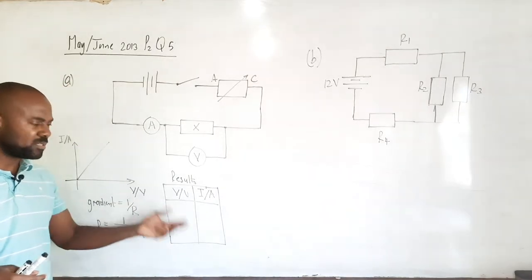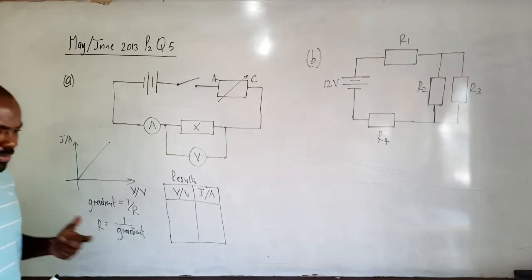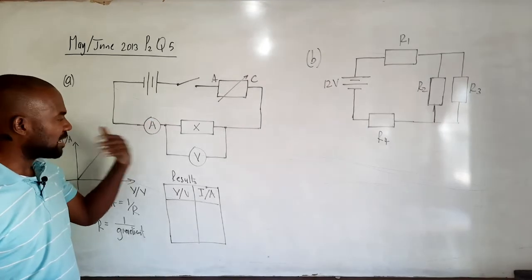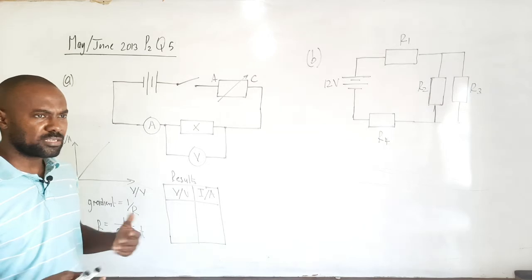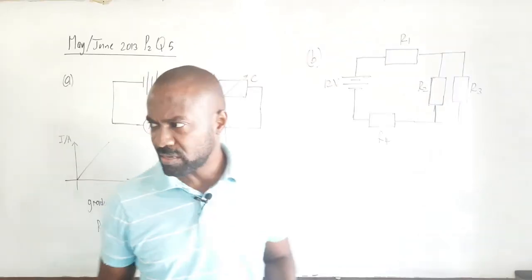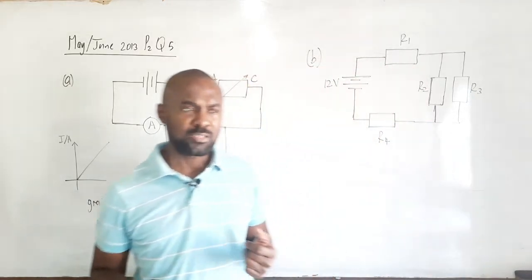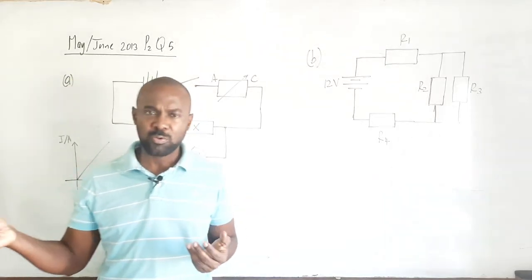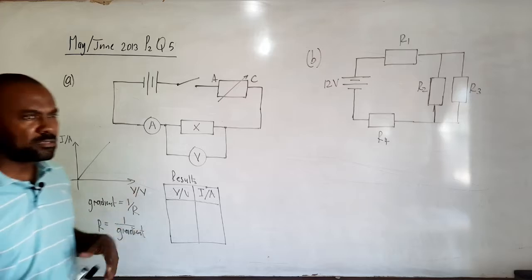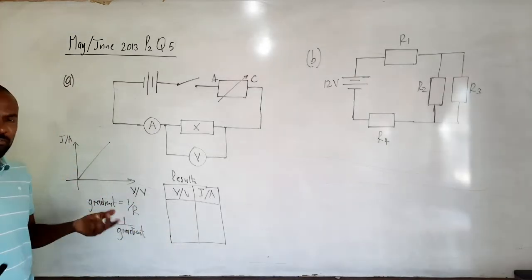This circuit and procedure allow us to obtain results from which we can plot a graph and determine the resistance of the conductor. Many students would be tempted to simply connect a battery, switch, voltmeter, and ammeter, close the switch, measure current and voltage, and use Ohm's law R = V/I. That experiment can be used, but you're probably not guaranteed to get the full six marks. A more detailed experiment like this one, explaining how to obtain the resistance from the graph, ensures you'd get those marks.